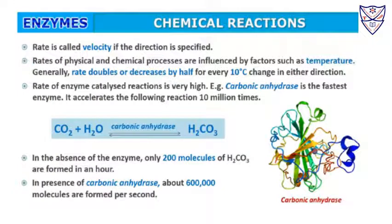What enzymes do is lower the rate needed — or more precisely, they speed up the rate of reaction. Rate is called velocity when the direction is specified. The rate is influenced by factors like temperature — generally as temperature increases, the rate increases, doubling or halving for every 10°C change. The rate of enzyme-catalyzed reactions is very high. For example, carbonic anhydrase is the fastest enzyme: it accelerates the conversion of CO2 + H2O to H2CO3 about 10 million times. Without the enzyme, only 200 molecules of H2CO3 form per second; in its presence, 600,000 molecules form per second.